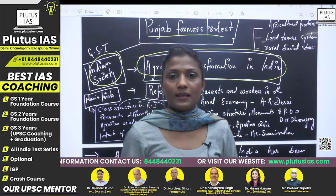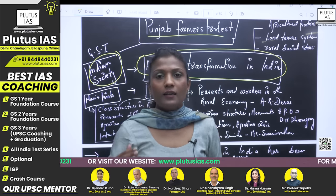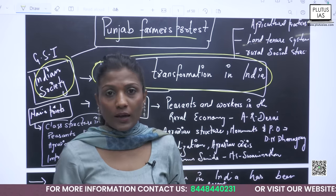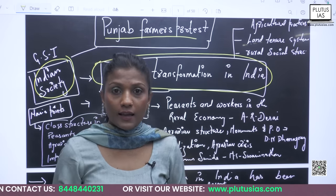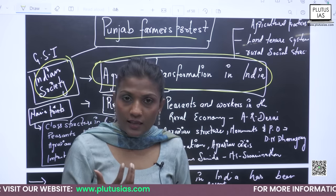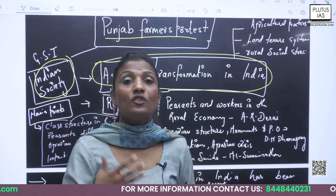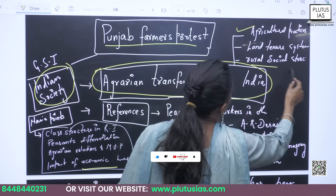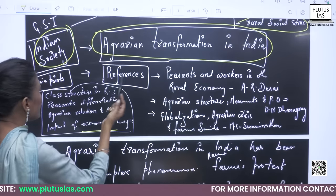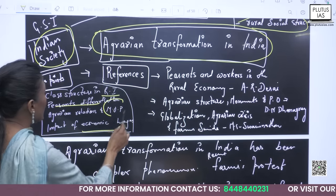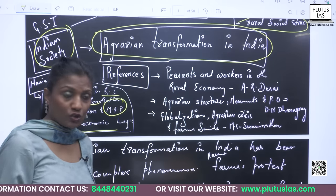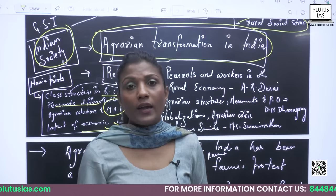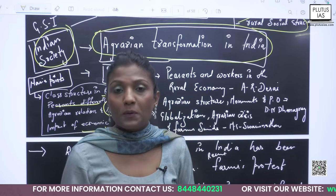Generally, aspirants make the mistake of writing issues in a very factual manner. You don't have to report facts — like farmer protest is about MSP, minimum support price, it comes under this ministry, there are challenges. You have to identify what the major problem is. You can talk about agricultural practices, rural social structure, land tenure systems, class structure in rural India, peasant differentiation, mode of production, and very importantly, how economic changes may give rise to conflicts.